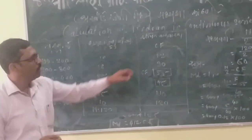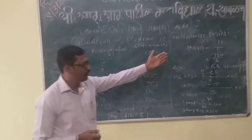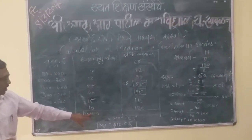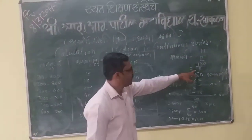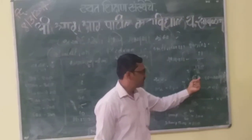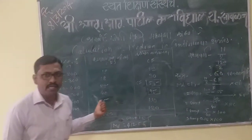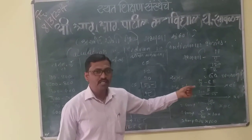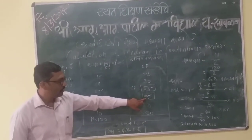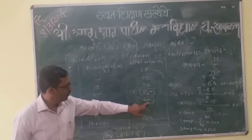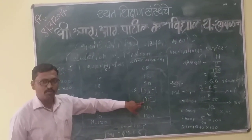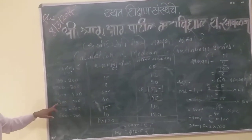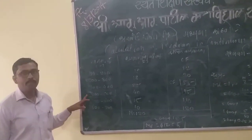First of all, we find the median class by using the formula n by 2. 120 is our total number of workers, divided by 2 equals 60. 60 is the order of our median. We see which class 60 falls under — the cumulative frequency 95 — so 60 comes under the class 400 to 500. This is our median class.